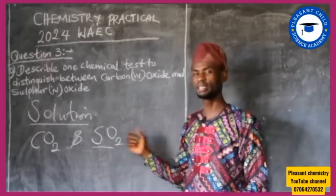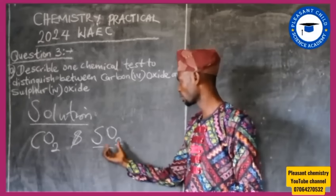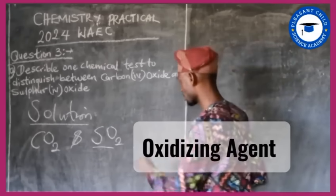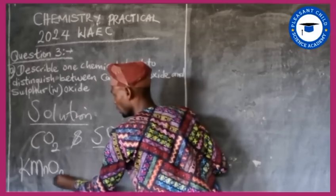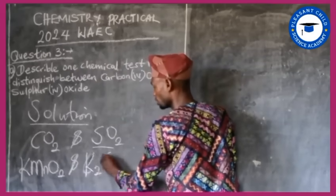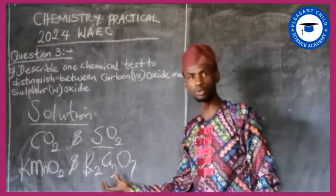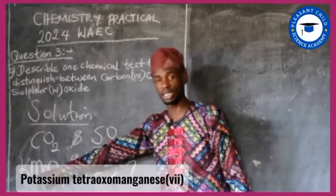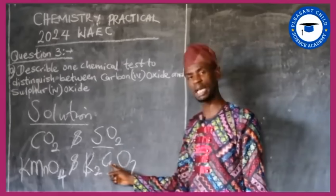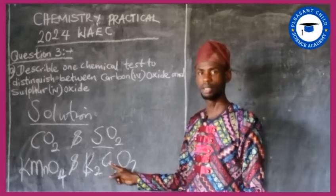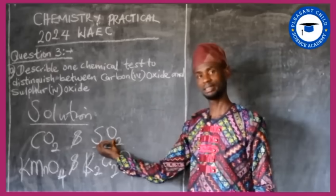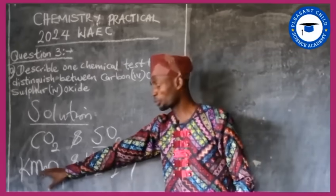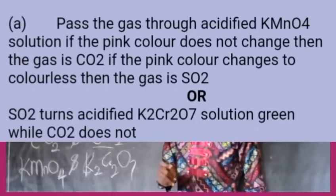SO2 is a reducing agent whereas CO2 is not. So we are going to make use of an oxidizing agent to differentiate between the two. That oxidizing agent is KMnO4 (potassium permanganate) or K2Cr2O7 (potassium dichromate). Both are oxidizing agents. If we use either of these two and pass the gases through them, when using KMnO4, the purple color of KMnO4 changes from purple to colorless.